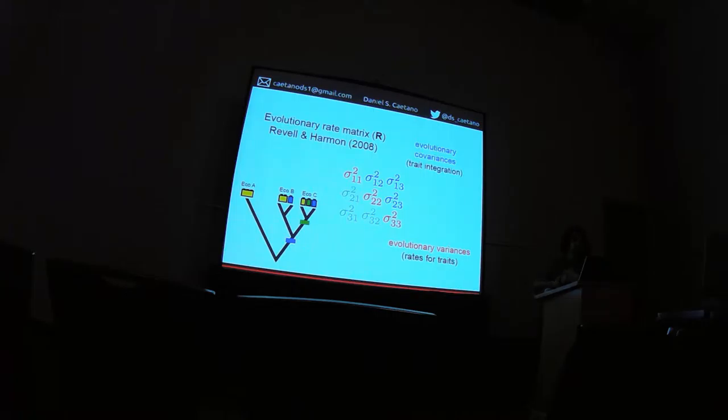And it is going to be an extension of what Revell and Harmon described as the evolutionary rate matrix. What is this? The covariance matrix that shows rates of trait evolution here in the diagonal, and evolutionary covariance. So the strength of this correlation, this integration along the traits here in the off-diagonal.